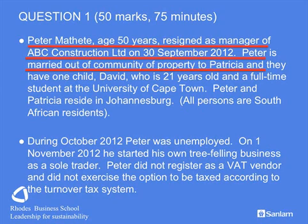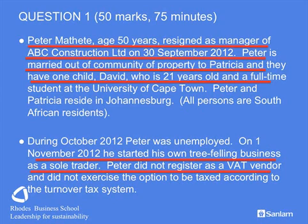The taxpayer is married out of community of property, so there is no problem in splitting interest income. The taxpayer has one child — we don't need to take that into account for rebate purposes, but we do still have him on the medical aid. A second business was started in November 2012 and commenced for four months in the tax year. We don't have to consider VAT or the turnover tax system — we are purely looking at a sole trader and lumping it on top of his employment income.